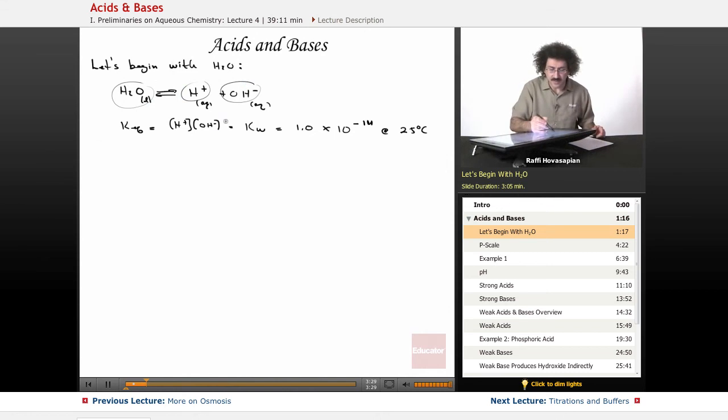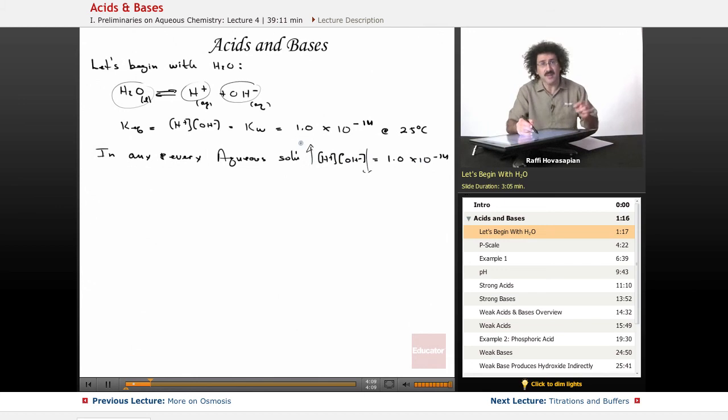Now, in any and every aqueous solution, the hydrogen ion concentration times the hydroxide ion concentration has to equal 1.0 times 10 to the negative 14. In other words, if the hydrogen ion concentration rises for some reason, the hydroxide ion concentration drops because you need, because their product has to equal a constant. That's what this whole idea is. A constant is something that doesn't change.